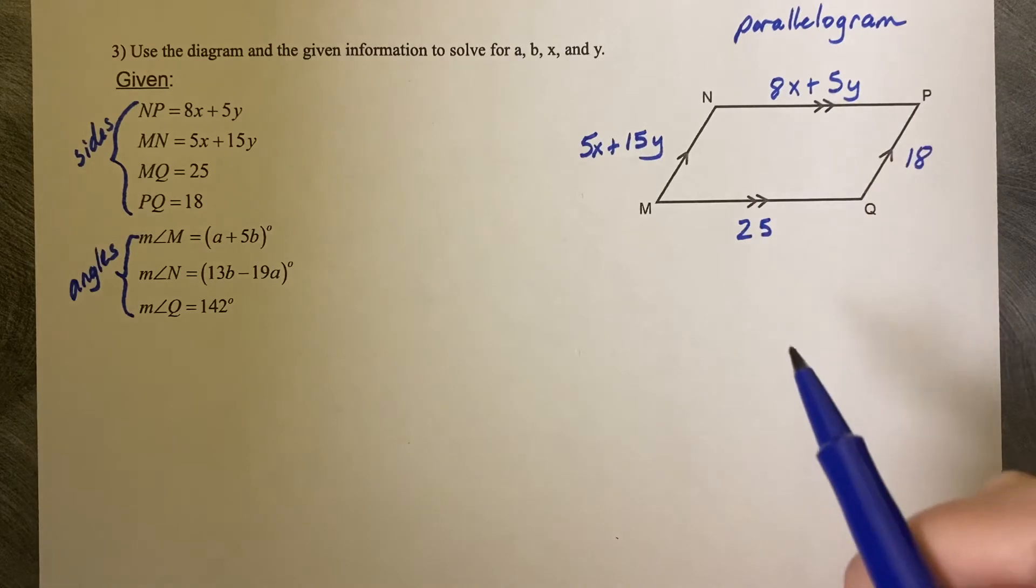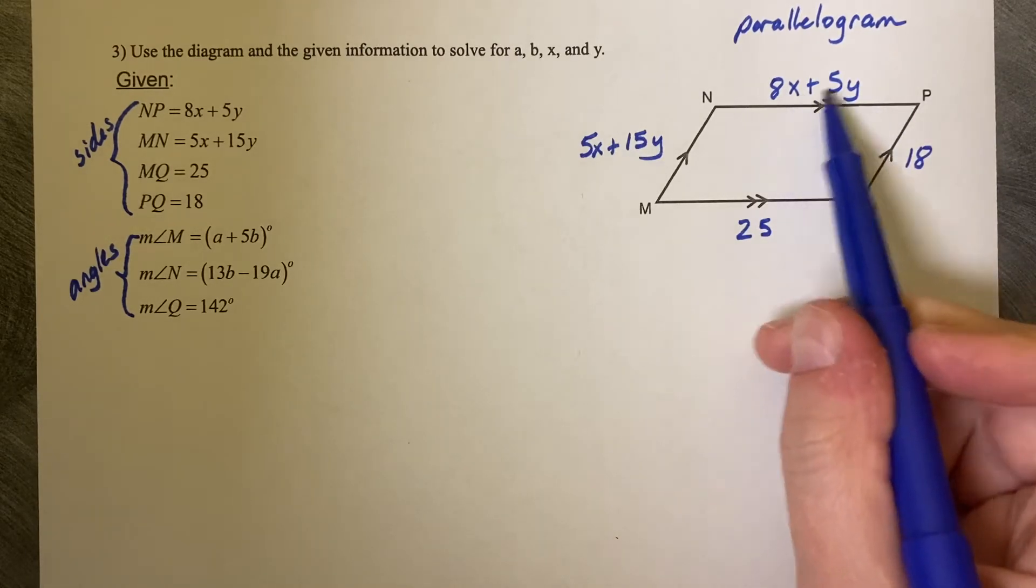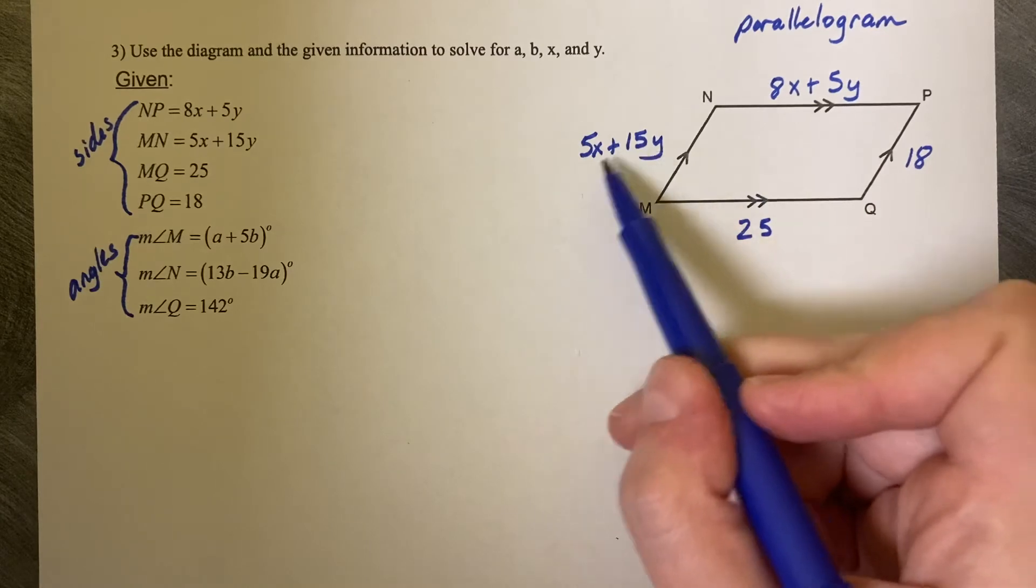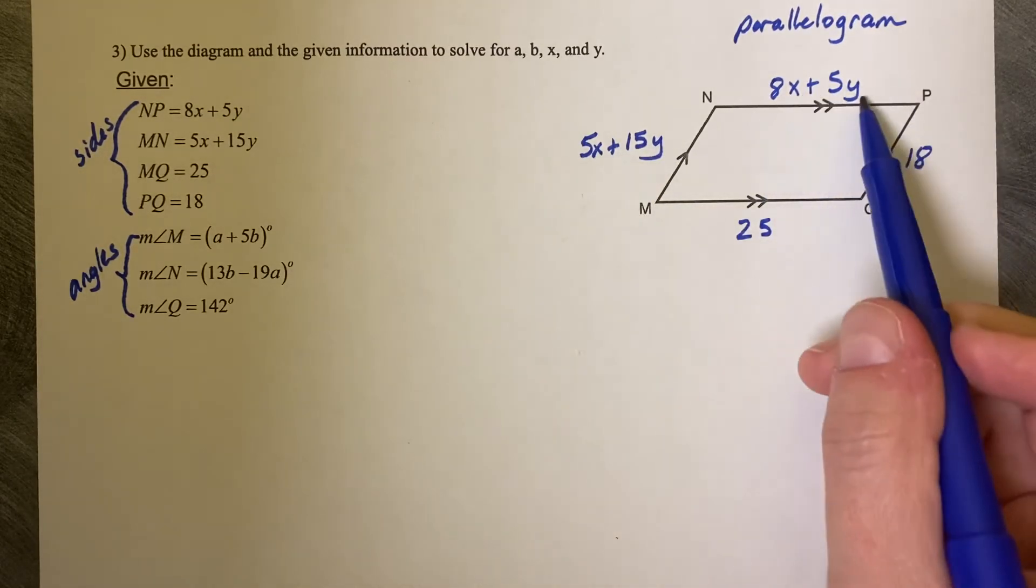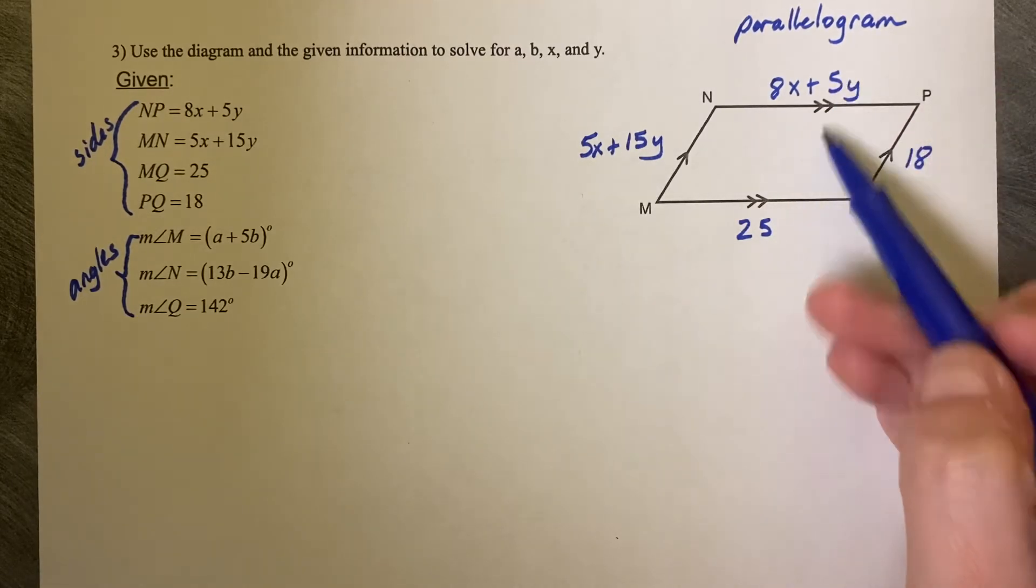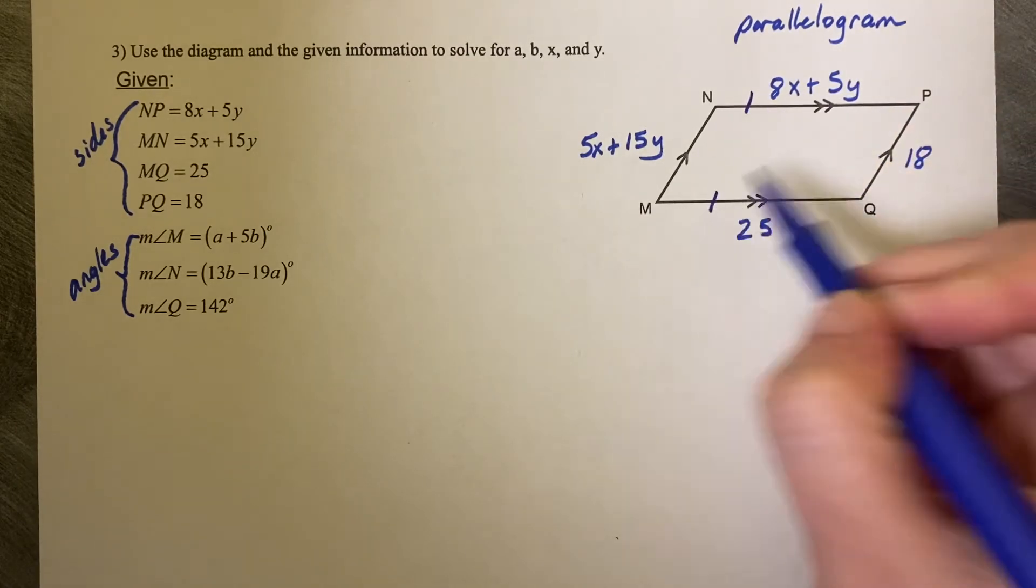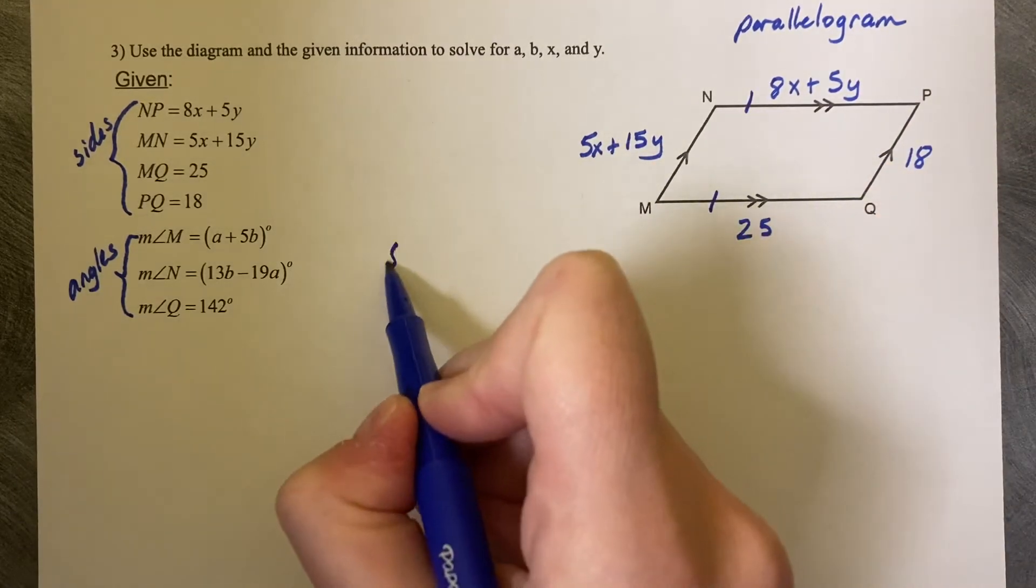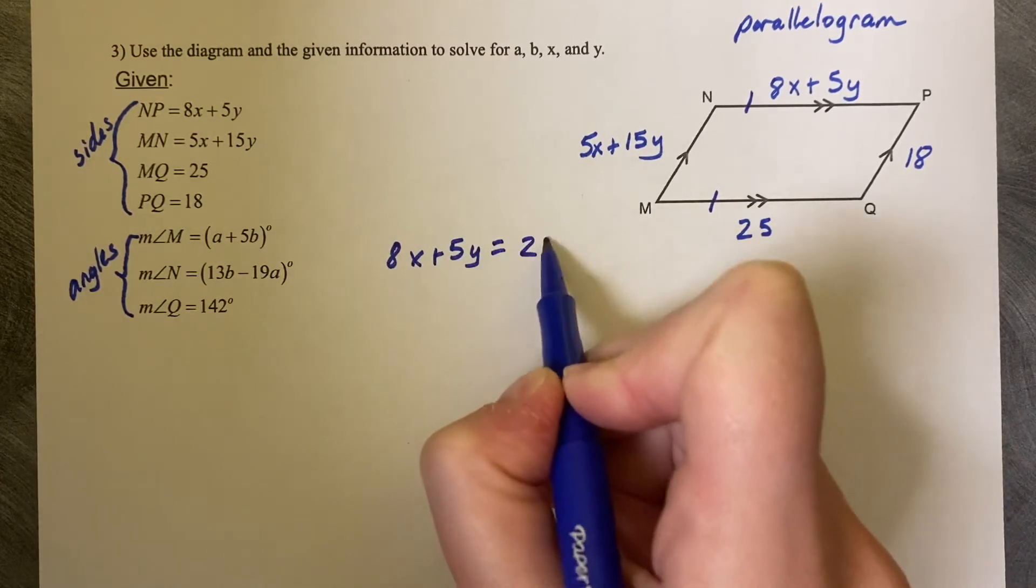So let's set up a system of equations to solve this. I know it's a system of equations because my X's and my Y's are together in my expressions. And if I have two variables then I need to be able to set up two equations. So let's set up the first one. What I know about a parallelogram is that opposite sides are congruent.